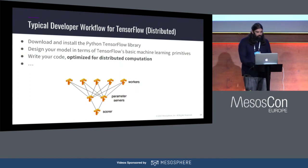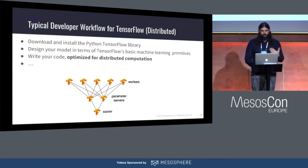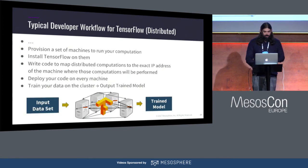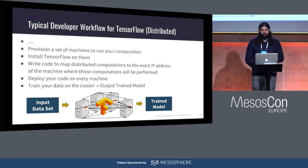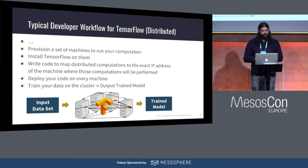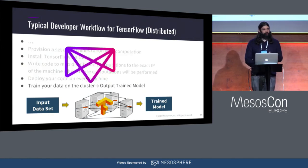If you want to move this to a distributed setting, the first three steps are very similar — download TensorFlow, design your model, write your code, now optimized for distributed computation. But then you have many additional steps: provision machines, install TensorFlow on them, write code to map distributed computations to exact IP addresses of machines, deploy your code on every machine — and only once you've done all of that can you start training. This whole process can be tedious and error-prone, especially when iterating on optimizations. DCOS automates all of this and gives you a similar workflow to single-node but in a distributed way.